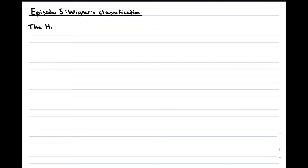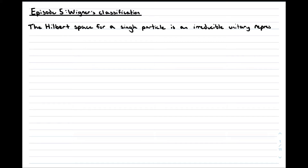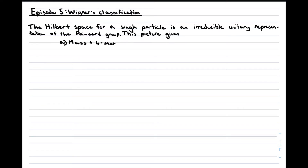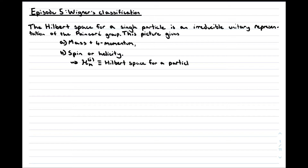But what is the Hilbert space that describes a single particle? The key principle of this video is that the states of a single particle live in a Hilbert space that transforms under an irreducible and unitary representation of the Poincaré group. It is natural to describe single particles this way, because this picture naturally leads to the idea of particles having a definite mass and a total spin, or helicity if massless. In this video, we will specialise to the case of massive particles.